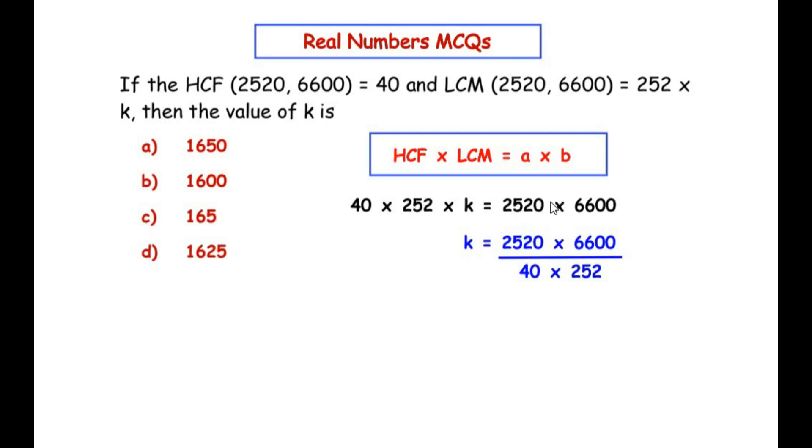The next step is simplification. We can see that 252 divides 2520: 252 × 10 = 2520. So this simplifies as k = (10 × 6600)/40.